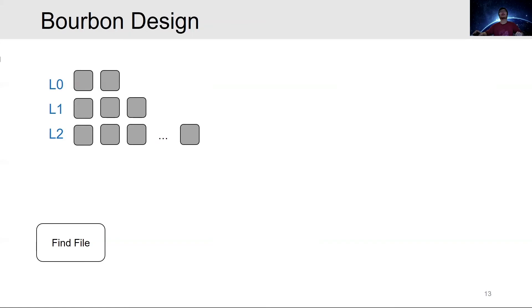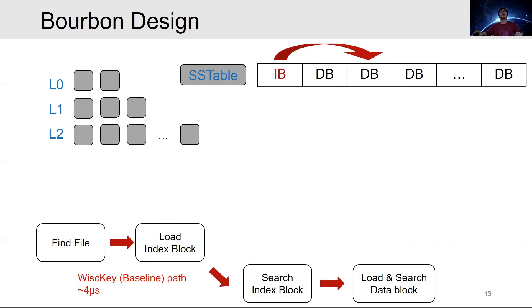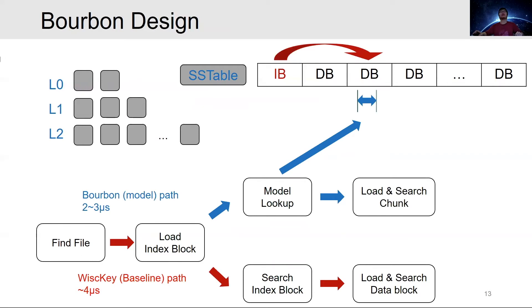We build Bourbon on WiscKey, which optimizes LevelDB by key-value separation. WiscKey stores values in a separate value log and stores key-value-address pairs in the LSM tree, which largely reduces read and write amplifications. Bourbon takes advantage of key-value separation to convert large and variable-sized values to a constant value-address in the LSM tree. With a fixed key size, we have constant-sized KV pairs, making it much easier to predict the position of a target. A GET request in Bourbon follows the baseline WiscKey path until an SSTable file is reached, where the model outputs an interval containing the target KV pair, and we binary search within that chunk to find the target.